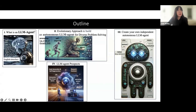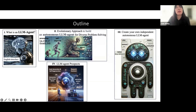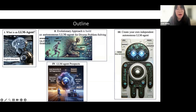Let me just introduce again. First, what is the LLM agent? Then what's the evolution approach from the literature reviews to build an autonomous LLM agent that can solve diverse problem solving. Then I want to introduce how to do it ourselves. Lastly, I want to introduce what's the future, because there are so many areas that have already been developed based on this thinking process.